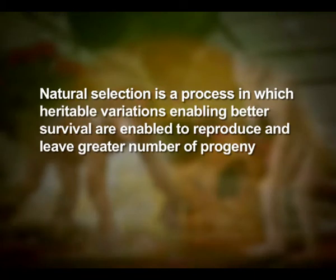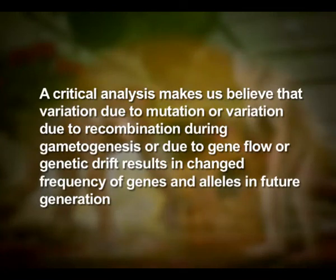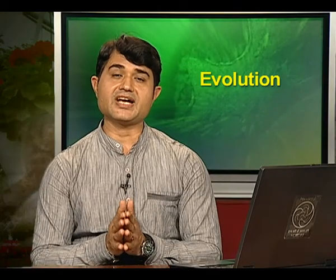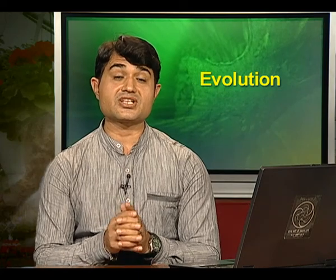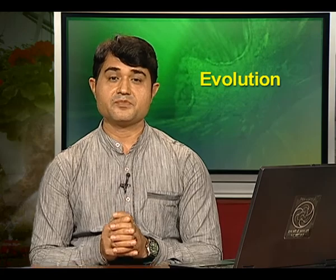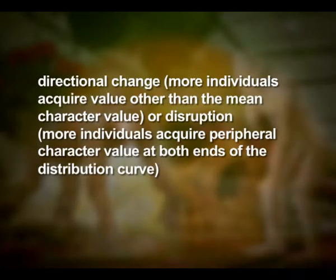Natural selection is a process in which heritable variation enabling better survival allows organisms to reproduce and leave a greater number of progeny. Variations due to mutation, recombination during gametogenesis, gene flow, or genetic drift result in changes in frequency of genes and alleles in future generations. Coupled with enhanced reproductive success, natural selection makes it look like a different population. Natural selection can lead to stabilization — in which more individuals acquire the mean character value — directional change — in which more individuals acquire a value other than the mean character value — or disruption — in which more individuals acquire peripheral character values at both ends of the distribution curve.